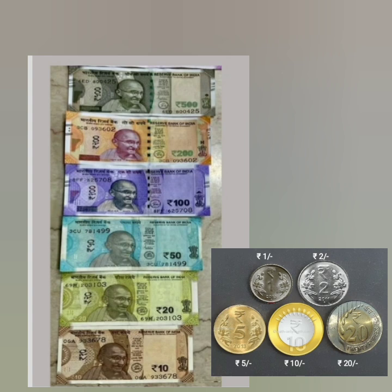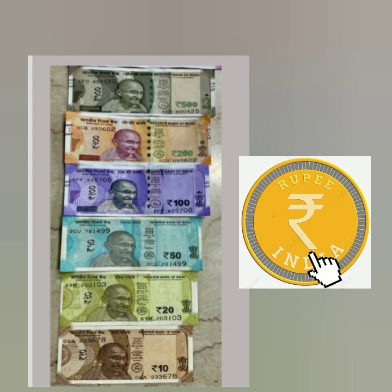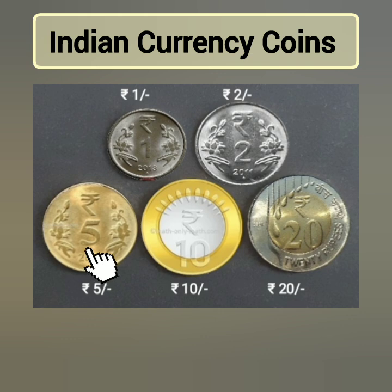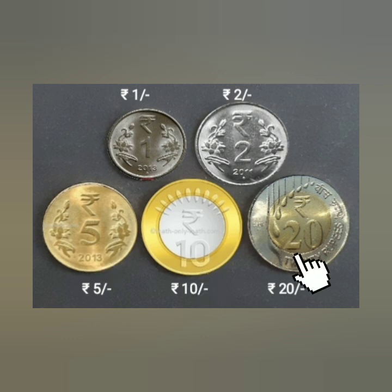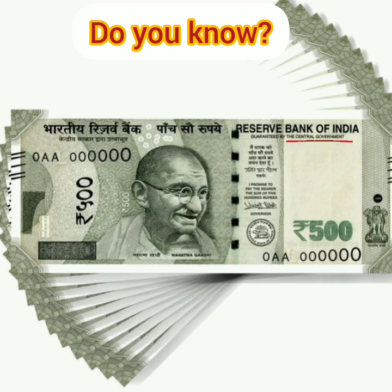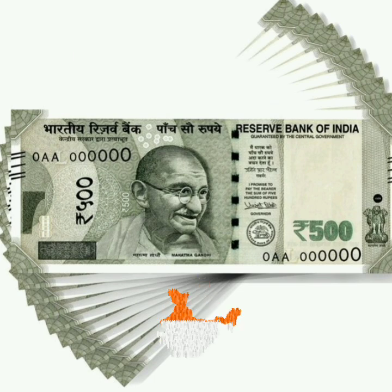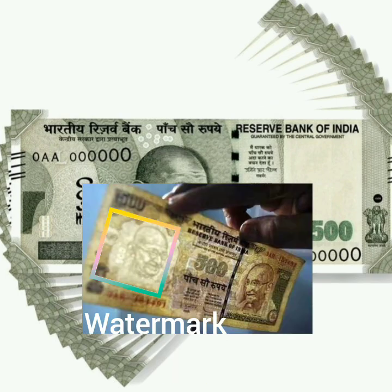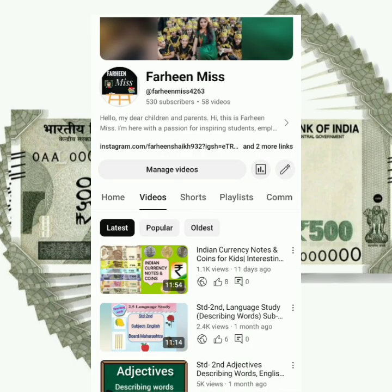Each note and coin has a different number written on it. That number indicates its value. Remember children, the ₹ symbol is the Indian currency symbol. We always write the symbol when writing the denomination. These are the Indian currency coins: 1 rupee coin, 2 rupees coin, 5 rupees coin, 10 rupees coin, and 20 rupees coin. The RBI issues currency notes, but the 1 rupee note and all coins are issued by the central government. The currency of India has many security features and unique designs. To learn more, check out the detailed video on my YouTube channel Farheen Miss.